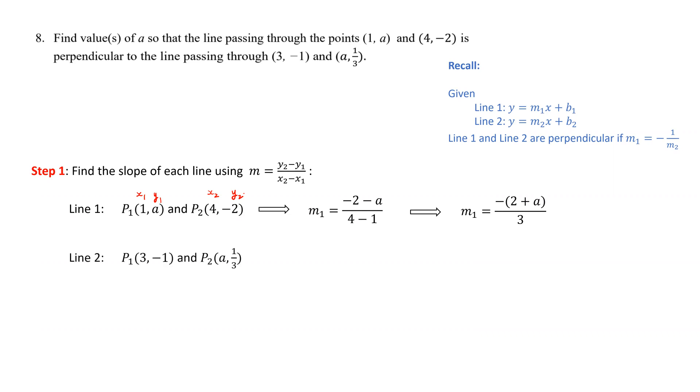We do the same procedure for the second line, letting P1 have coordinates (x1, y1) and P2 have coordinates (x2, y2). We substitute in the slope equation and after simplification, get (1/3 + 1)/(a - 3).